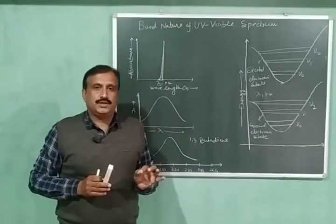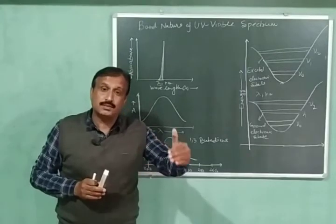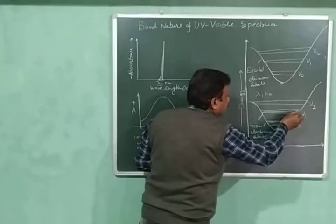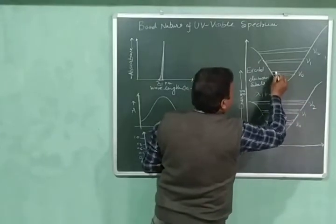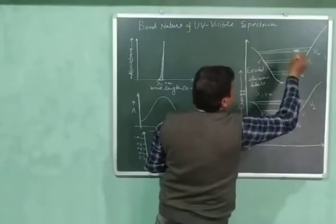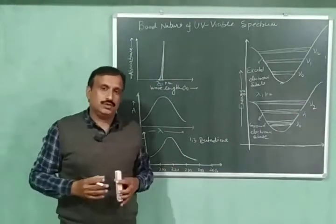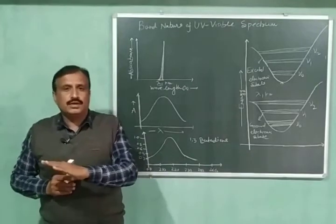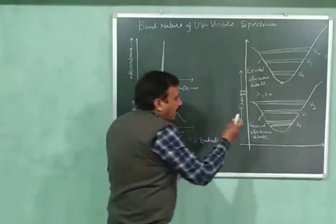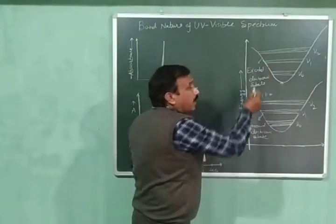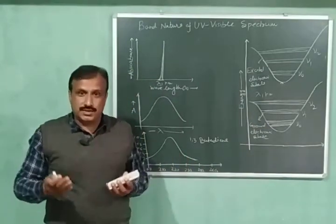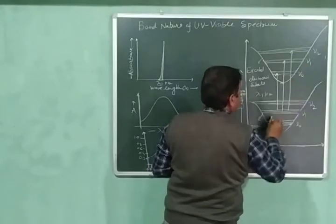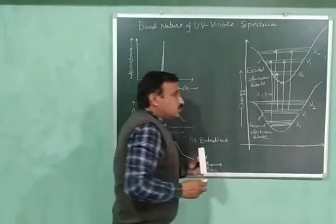Furthermore, due to the rotational motion of the molecules, these vibrational energy levels are further subdivided into rotational energy levels. These lines represent the rotational energy levels present within the vibrational energy levels. So, where we were expecting only a single transition, now there will be a number of transitions possible between any of the vibrational or rotational energy levels of the ground state to any of those of the excited state.